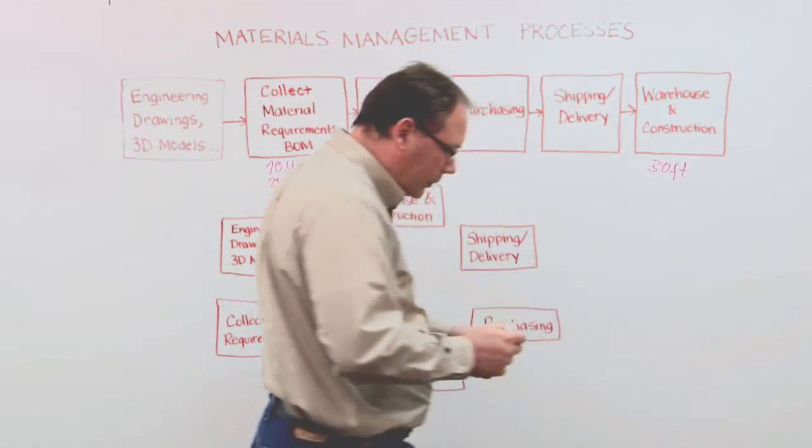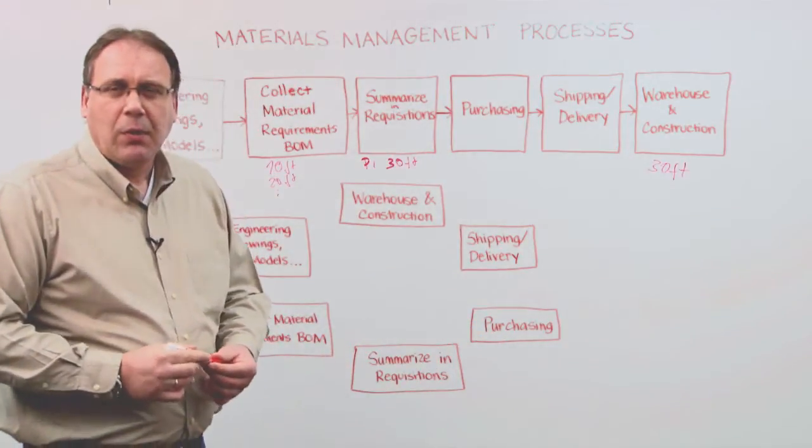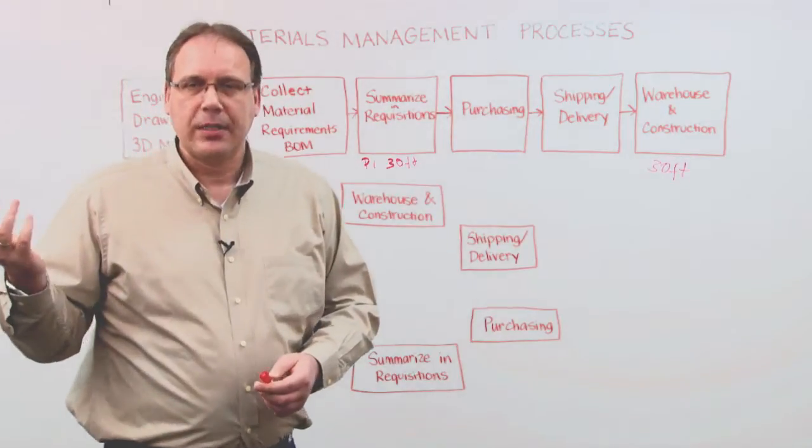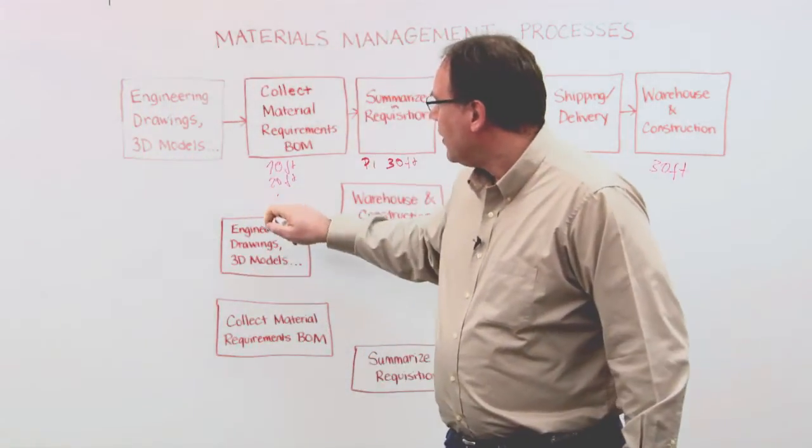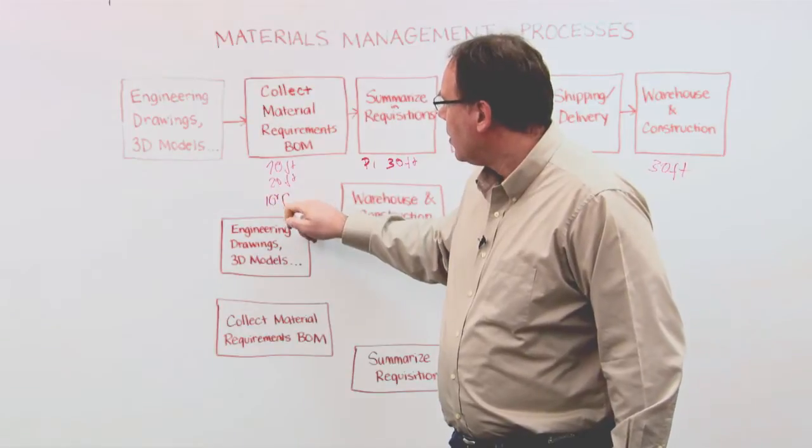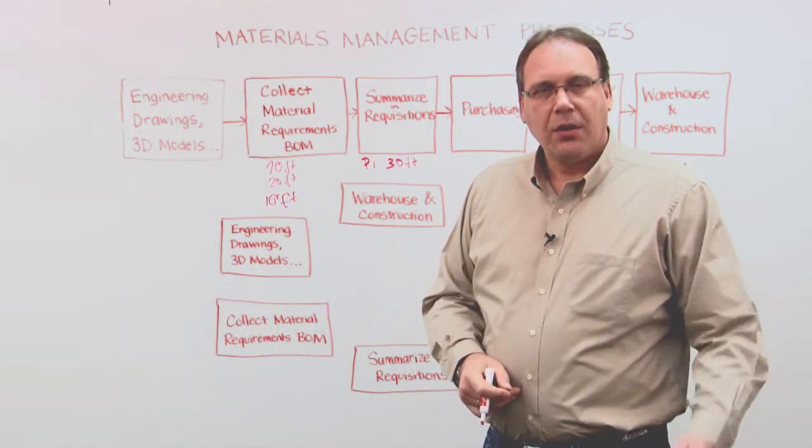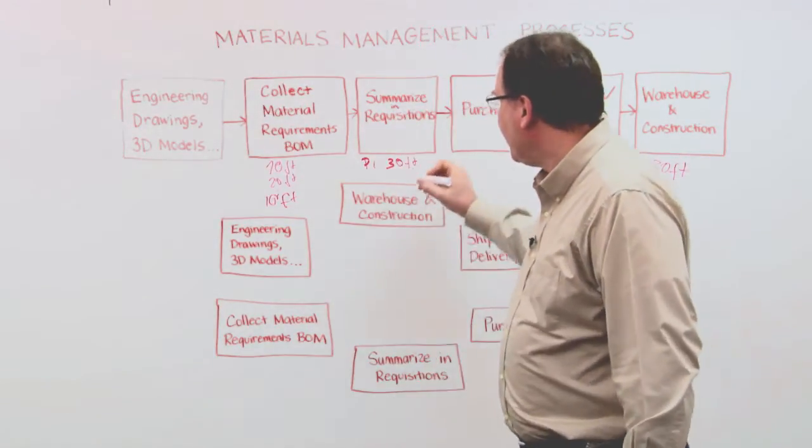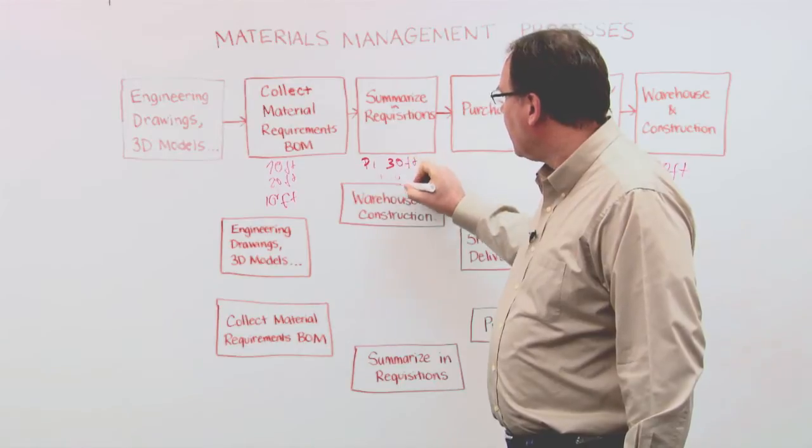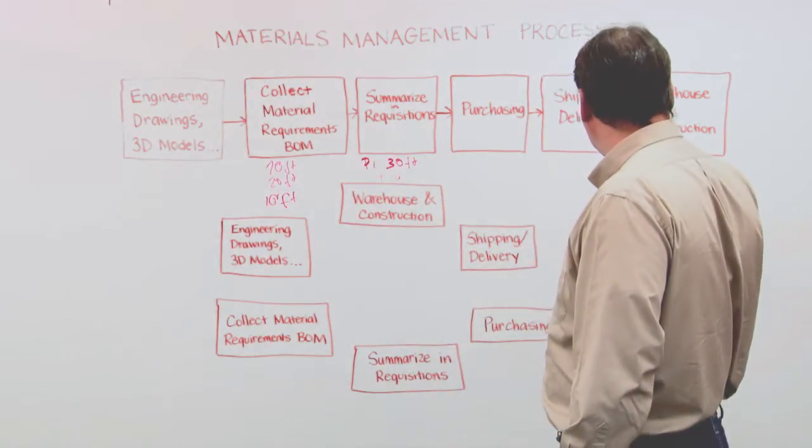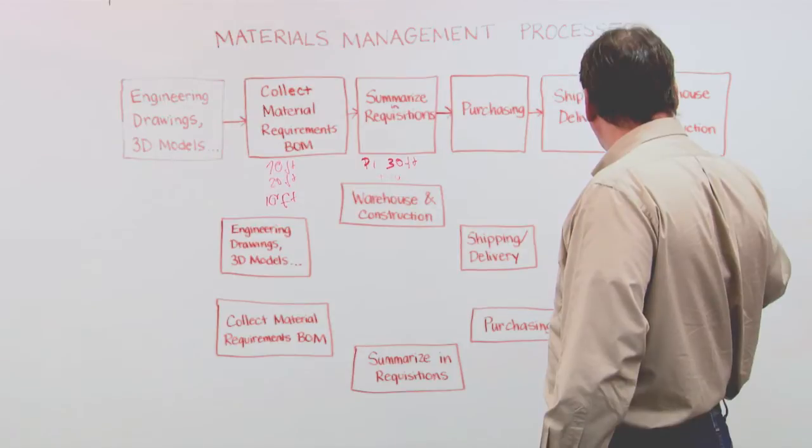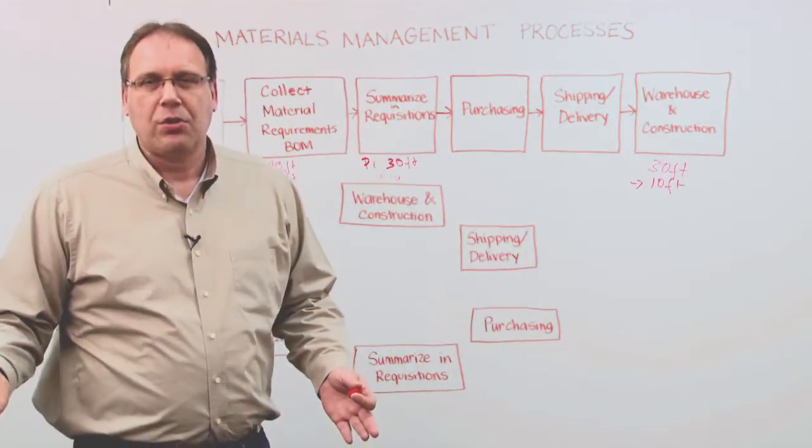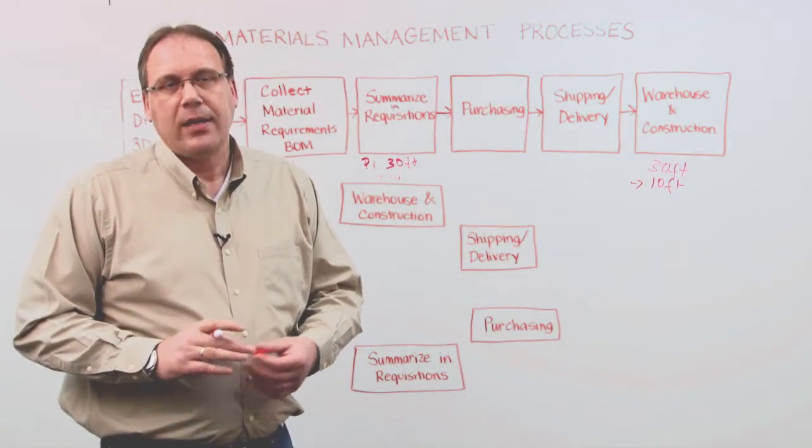But what happens now when in the meantime the model changed? For example, suddenly we have another 10 feet of pipe needed, so I need 40 feet and so on. What happens when material was damaged or material is no longer needed, creating minuses and surpluses?